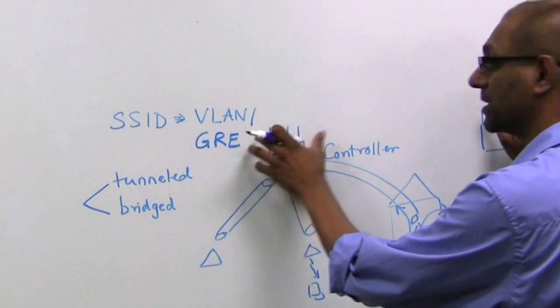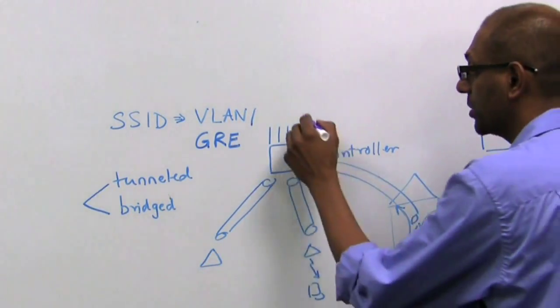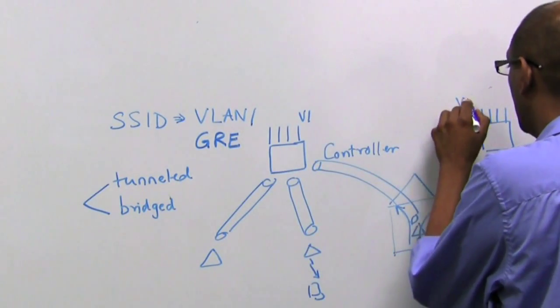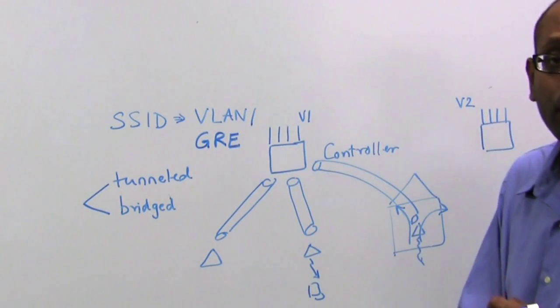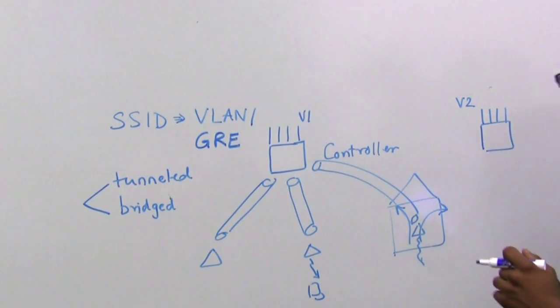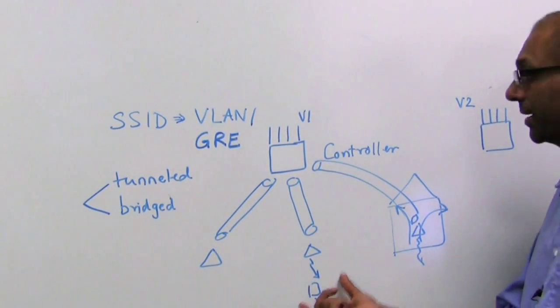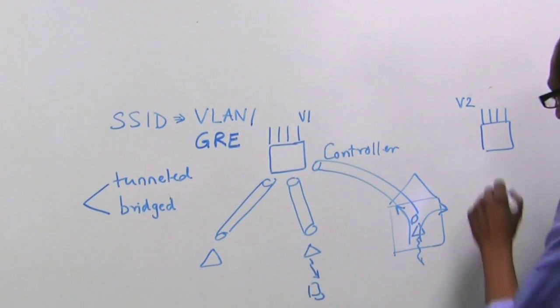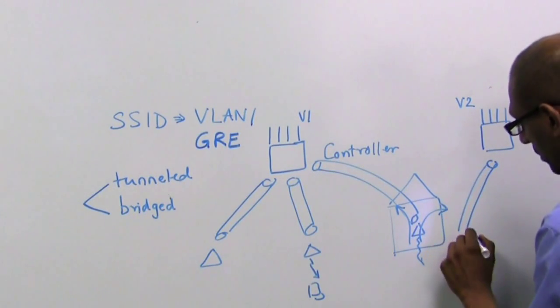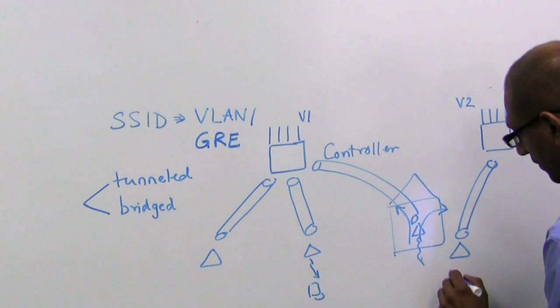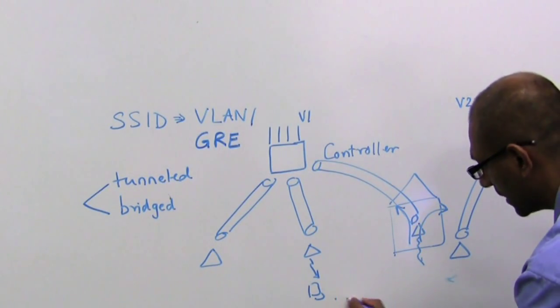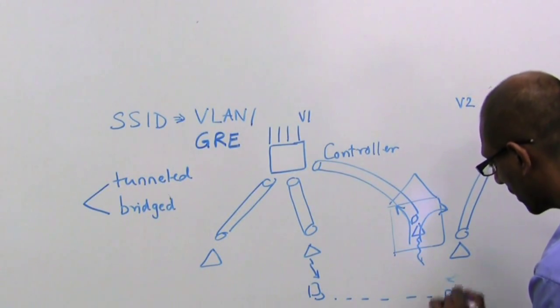And maybe not all the VLANs are visible on all the controllers. So you could have, for example, VLAN 1 here and only VLAN 2 here. What happens to a user who moves from an access point connected to this controller to an access point that's connected to a different controller? So as the user moves from here to here, what happens?